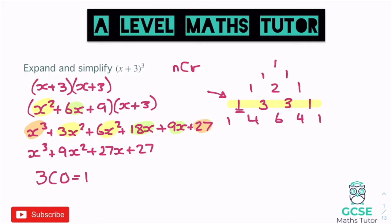For the next one: 3C1 gives us three. Then 3C2 also gives us three. And 3C3 gives us one. So the pattern is 1, 3, 3, 1. Make sure you know what that button is in your calculator — it's normally just behind the divide, so press shift, nCr, and then whatever number we're looking for, starting with zero and going up to one, two, three for those next ones.